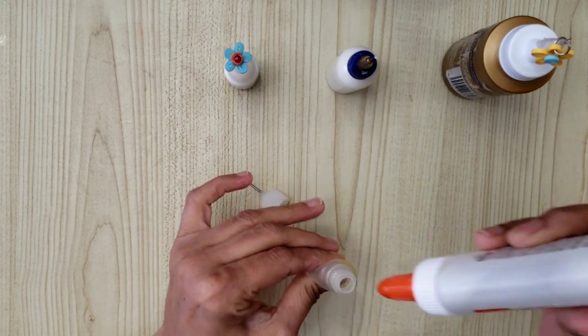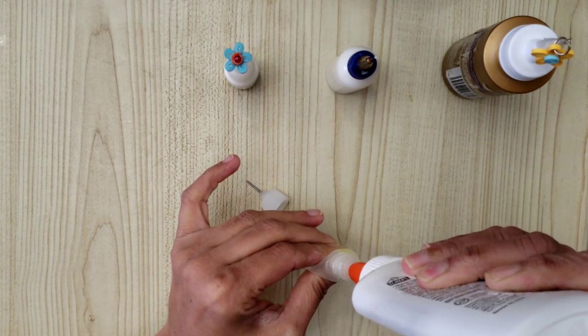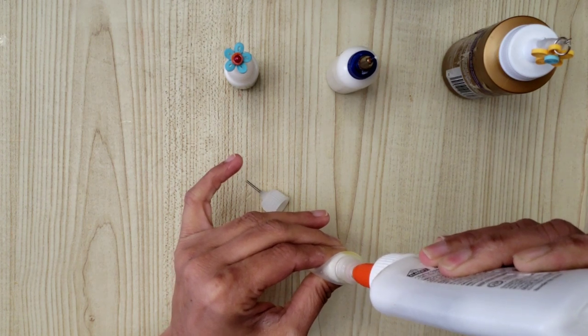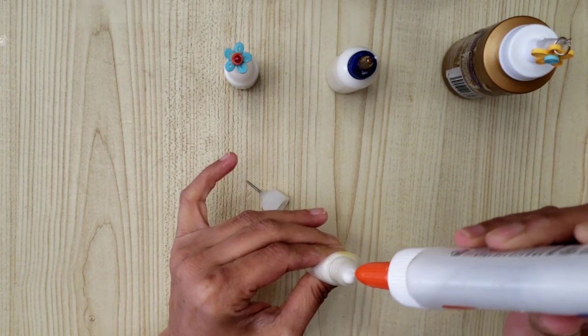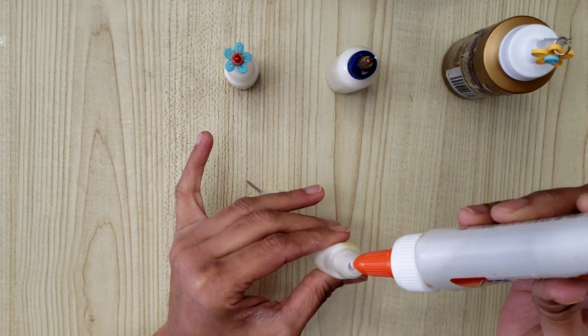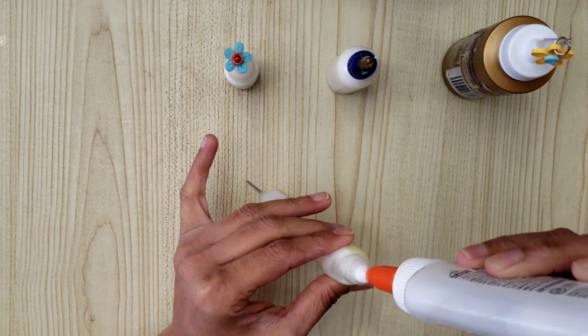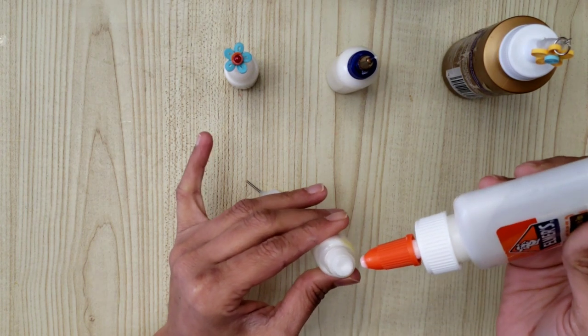Squeeze the bottle and start filling it. When you see the glue is flowing out, gently unsqueeze it. Continue this process, squeeze and unsqueeze.